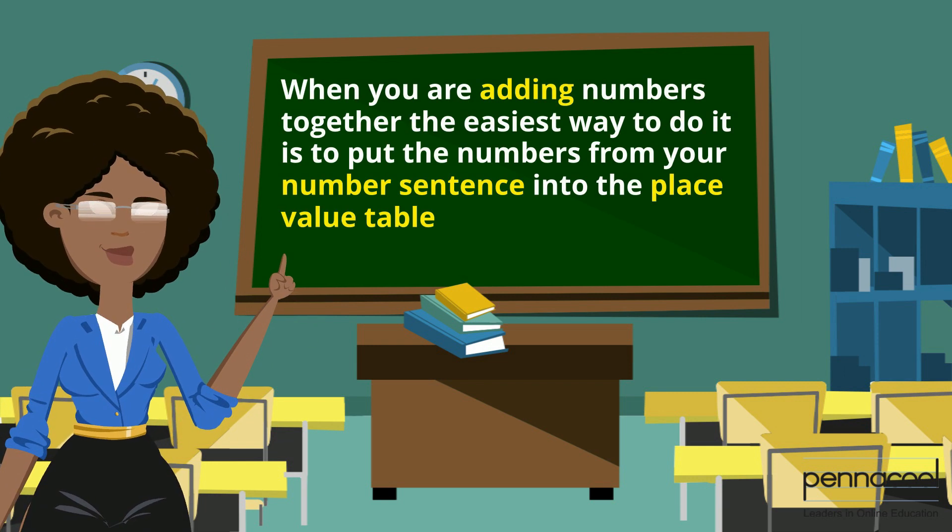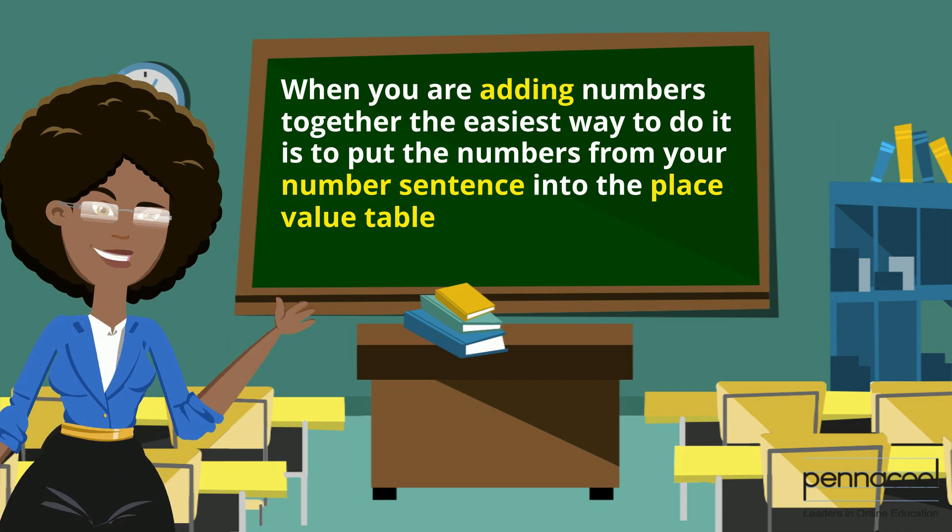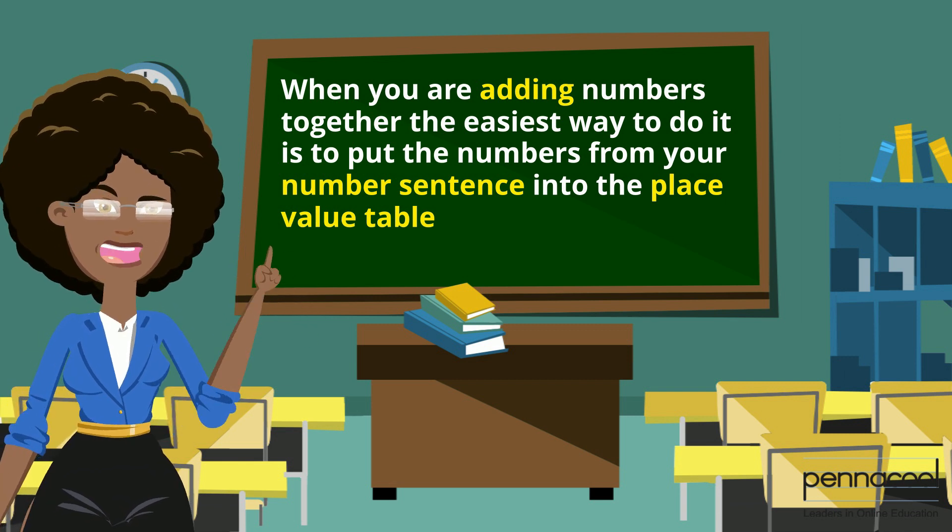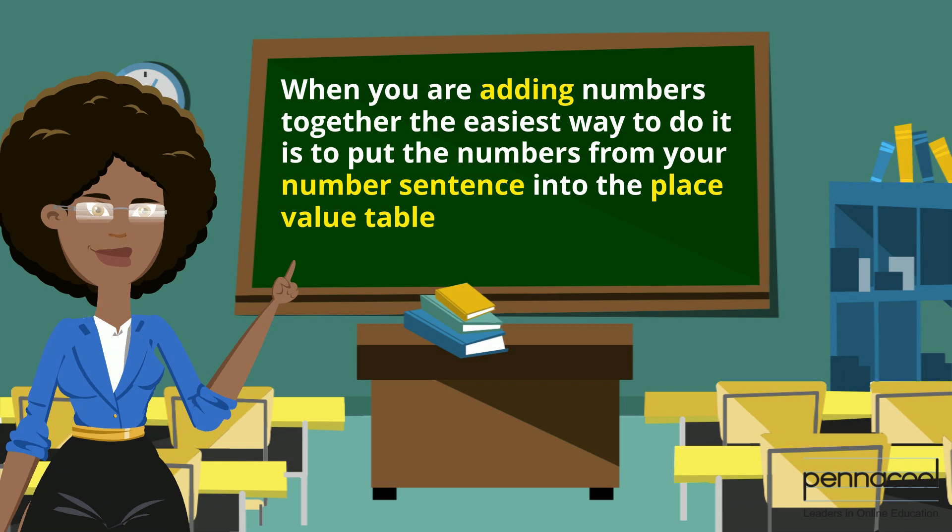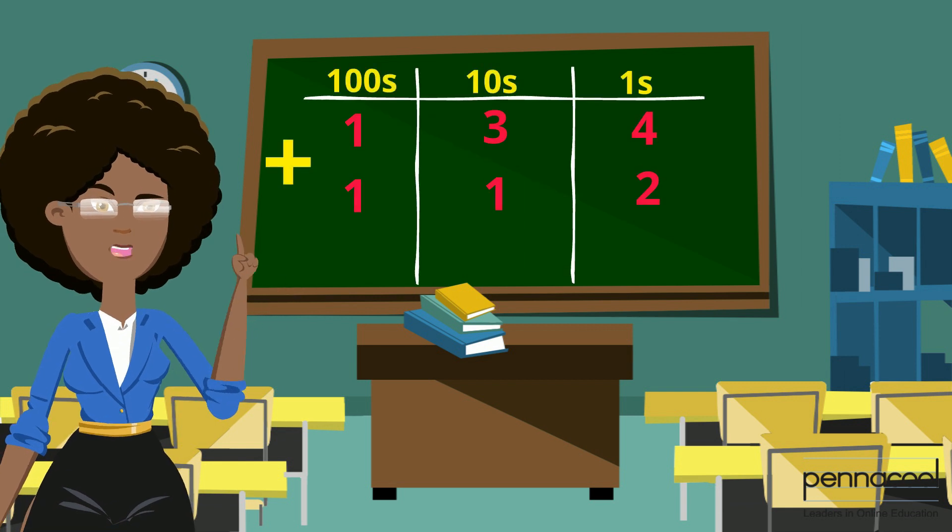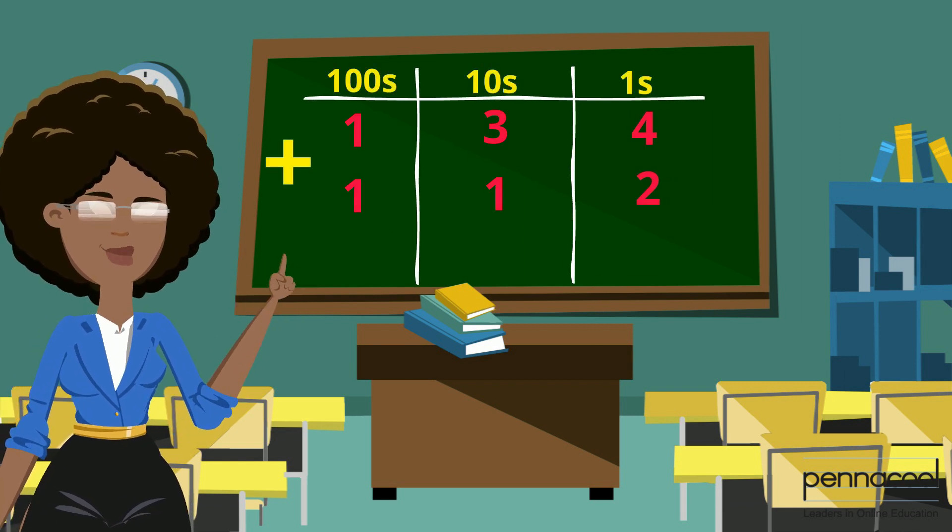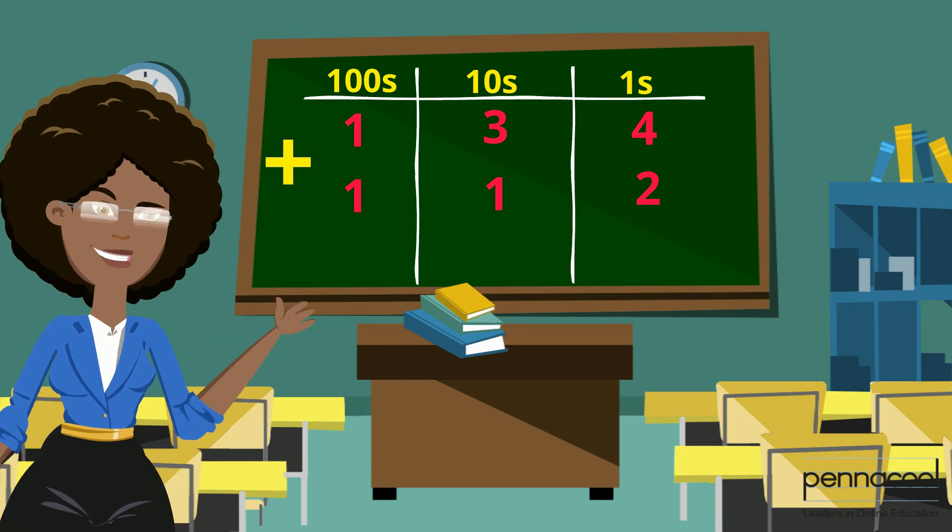When you are adding numbers together, the easiest way to do this is to put the numbers from your number sentence into the place value table. Ones go under the ones column, tens go under the tens column, and hundreds go under the hundreds column until all the numbers are in.